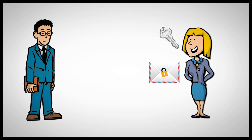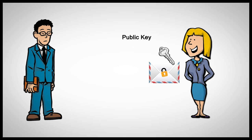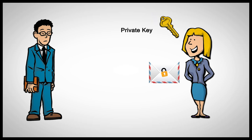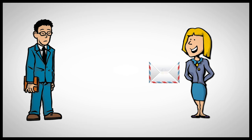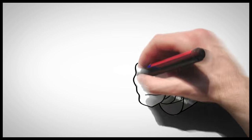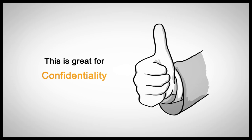Anything encrypted with the public key cannot be decrypted with the same key. It has to be decrypted with the corresponding private key, which is kept secret. So Mary uses her private key to decrypt the message and read it. This is great for confidentiality — anyone who intercepted that message cannot decrypt it because they don't have Mary's private key.